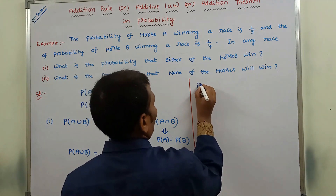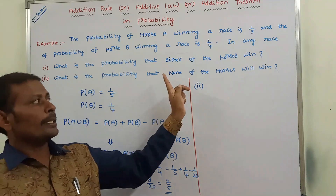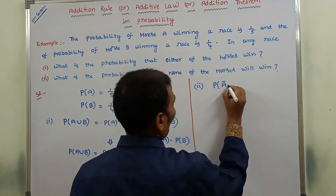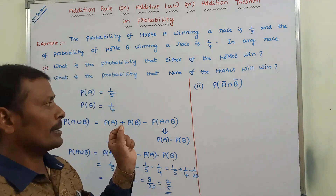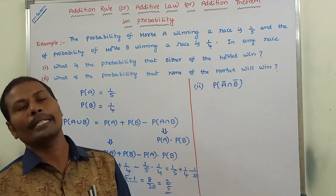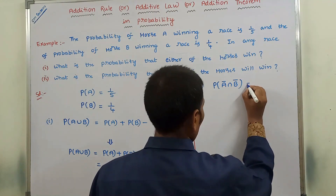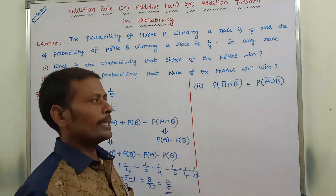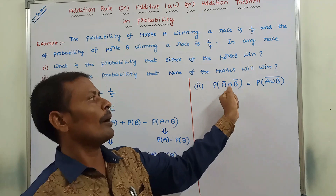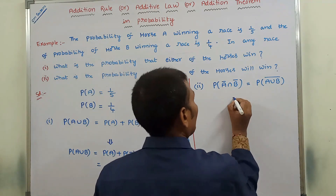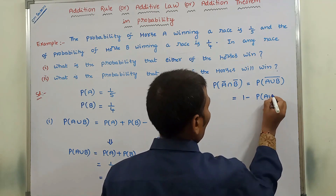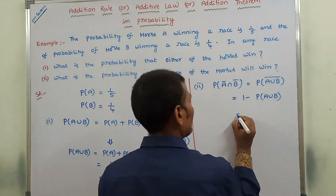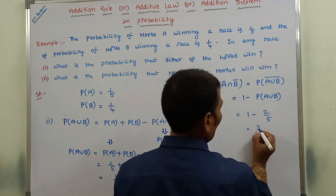Now for the second problem: what is the probability that none of the horses will win? That is denoted by P(Ā ∩ B̄). According to set theory, Ā ∩ B̄ = complement of (A ∪ B), which equals 1 − P(A ∪ B). We already know P(A ∪ B) = 2/5, so the answer is 1 − 2/5 = 3/5.